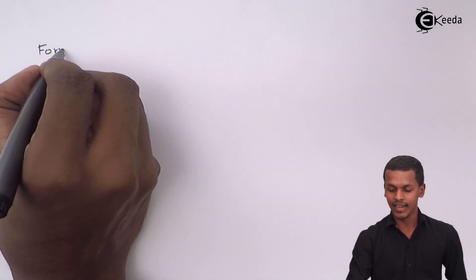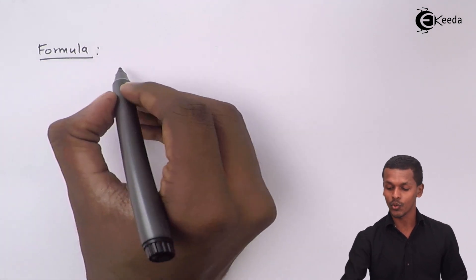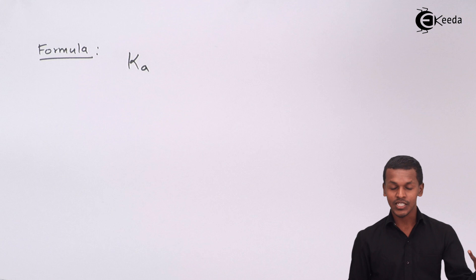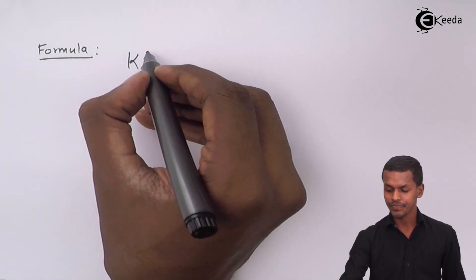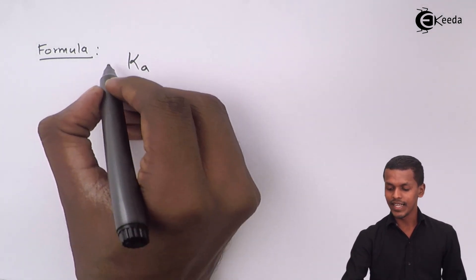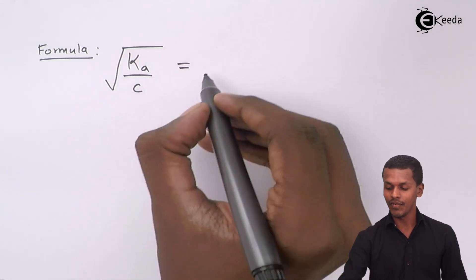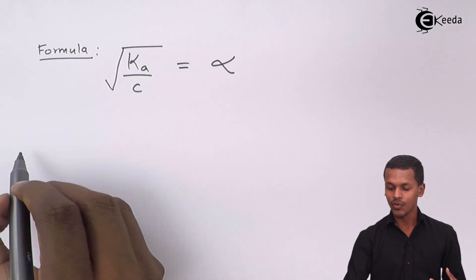We know the formula is very easy — the same one we used in our previous lecture. The degree of dissociation, alpha, is calculated by taking the square root of Ka divided by C.